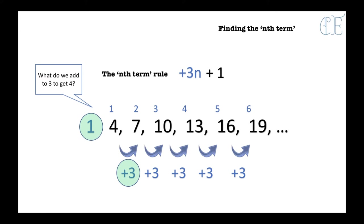Let me explain that a little more slowly. When we're finding the nth term, it is a rule we use to find any number in the sequence. Here we have term 1 which is 4, term 2 is 7, term 3 is 10 and so on. But if we want to find the hundredth term, we need to use this rule. The first thing you do is find the term to term rule, which is the plus 3 part — so the beginning is 3n. Then we work out what we need to do to get from 3 to the first term, which is 4, and it's just add 1. So the nth term is 3n + 1. Now we can use it to find out what the hundredth term is.